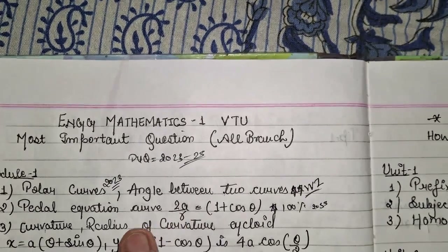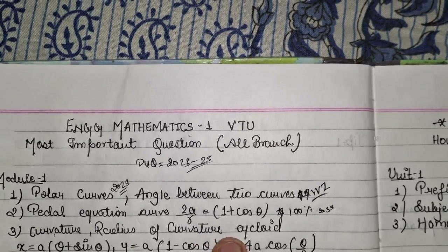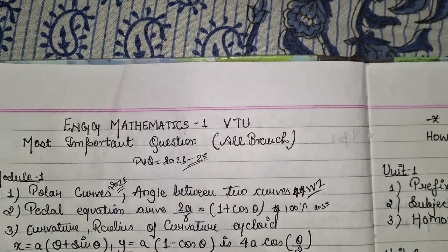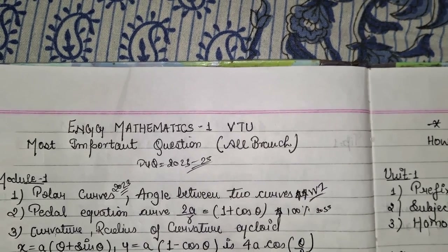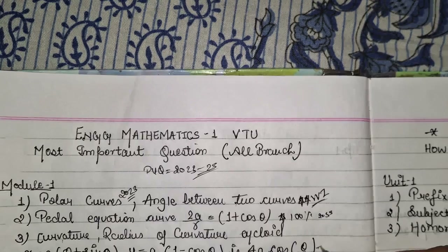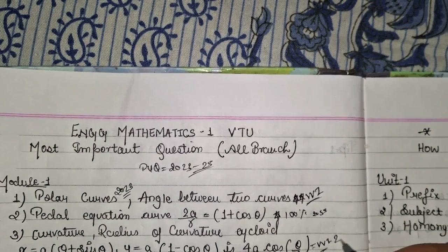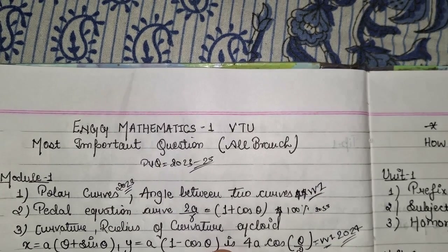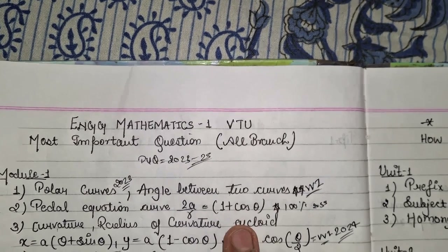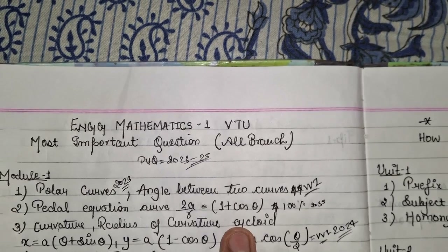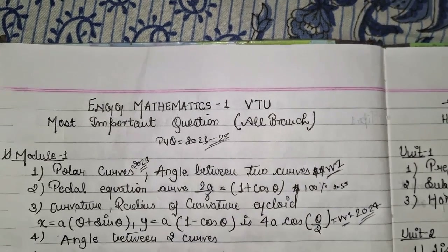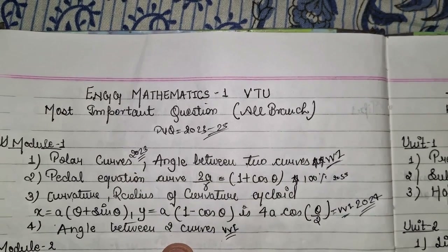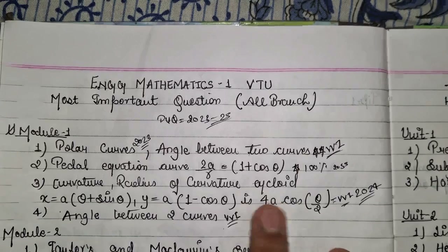Question three is the curvature and radius of curvature of a cycloid: x = a(θ + sin θ), y = a(1 − cos θ), with answer 4a·cos(θ/2). This was asked in 2024 with 8 marks. Question four is again the angle between two curves — a very important topic. Practice two to three questions from each topic for good marks, completing Module 1.